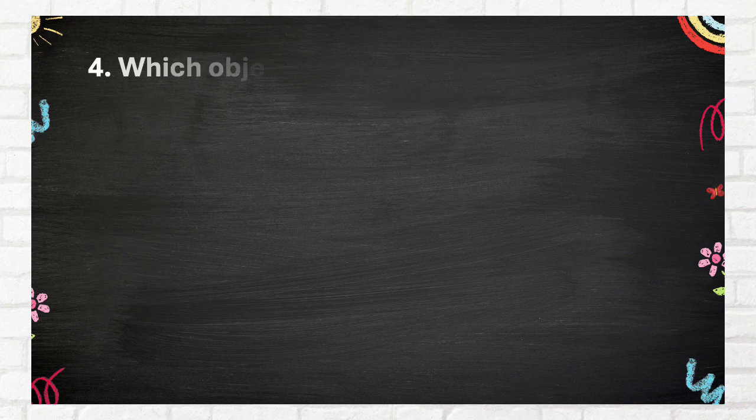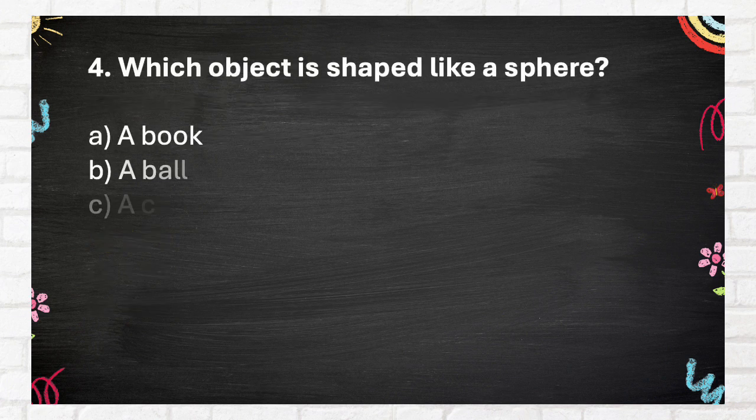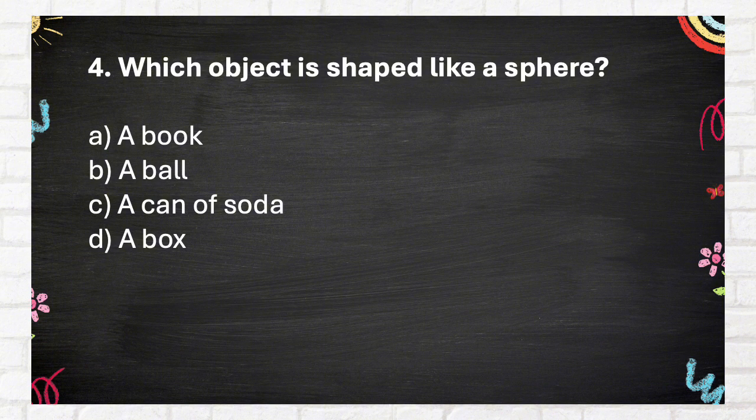Question number 4. Which object is shaped like a sphere? Again, which object is shaped like a sphere? A. A book. B. A ball. C. A can of soda. D. A box.